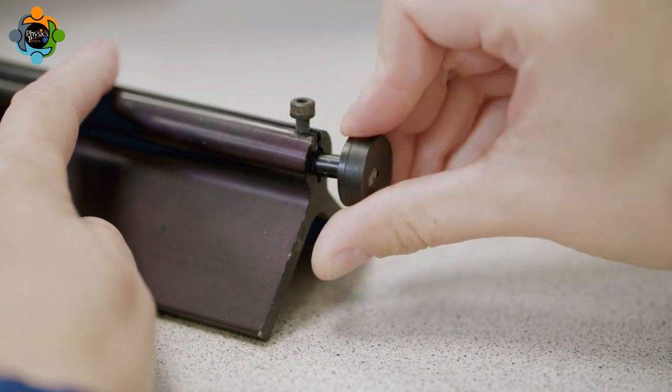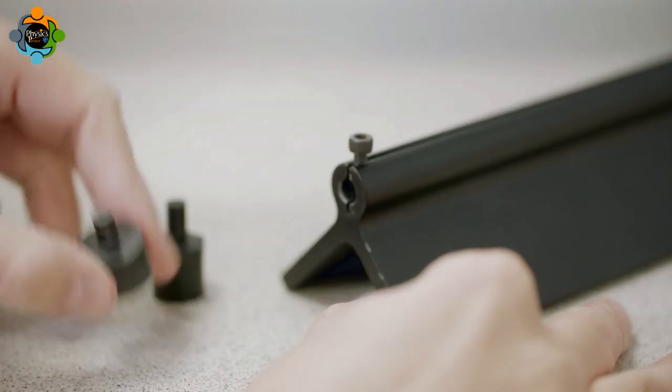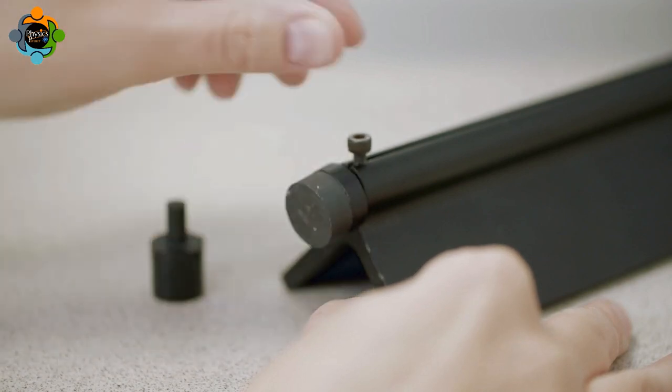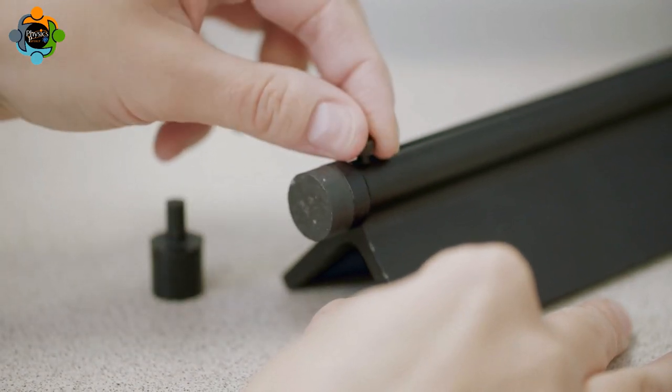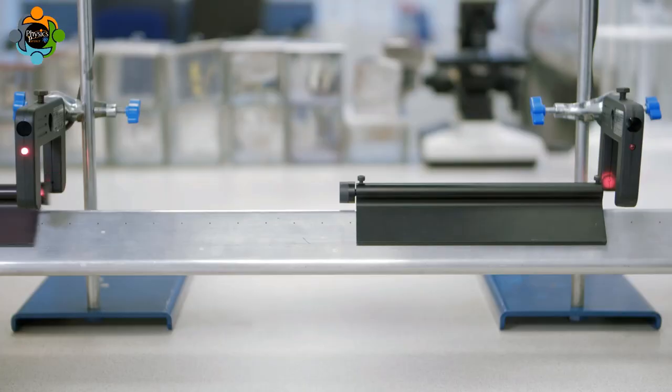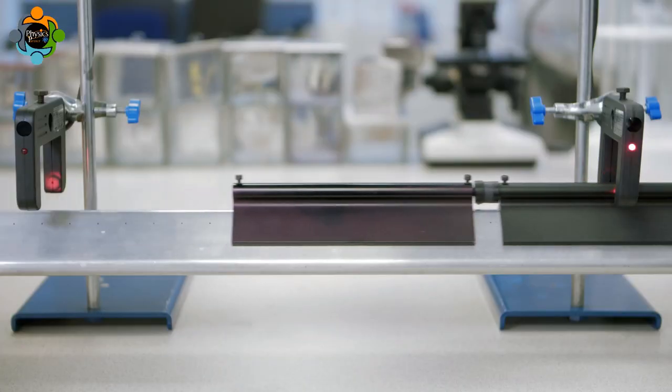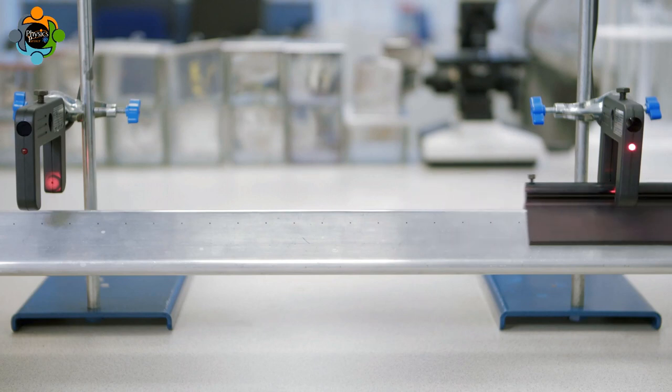Now we are going to consider inelastic collisions. These are collisions where kinetic energy is not conserved. In an inelastic collision, the gliders stick together when they collide.